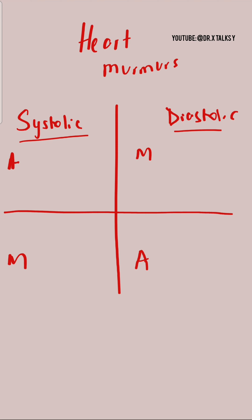On the first horizontal line, S comes after whatever the first letter is, and on the bottom horizontal line, R comes after whatever the first letter is.